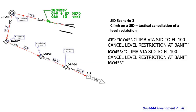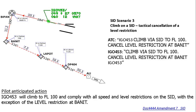In this scenario, the restriction 'at or below flight level' at a waypoint is being removed by ATC, but the controller has not granted any other freedom. Therefore, the pilot must still follow the altitude restrictions at BIPAN and LAPAUT.